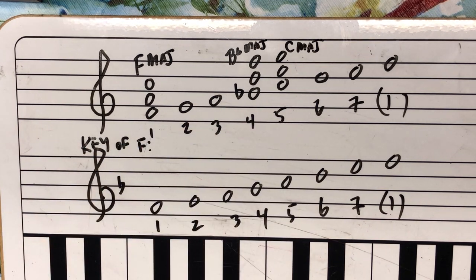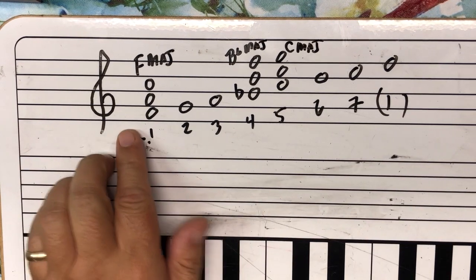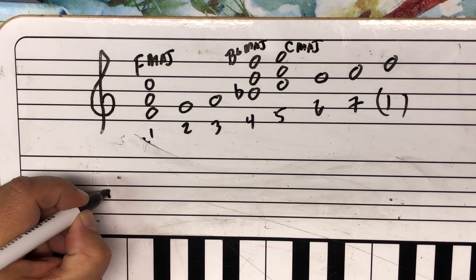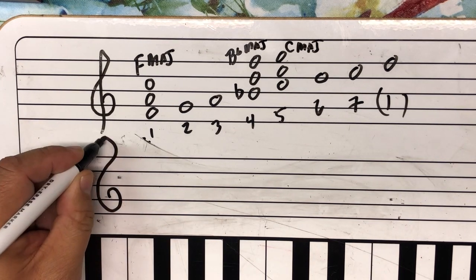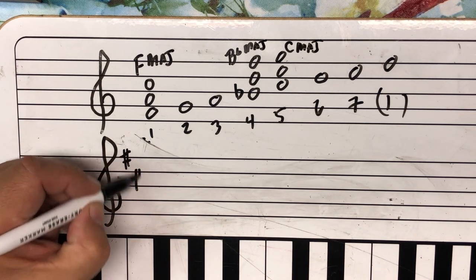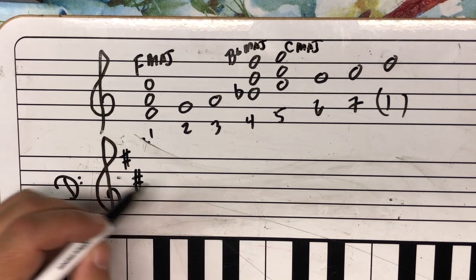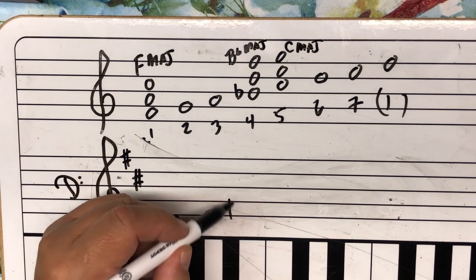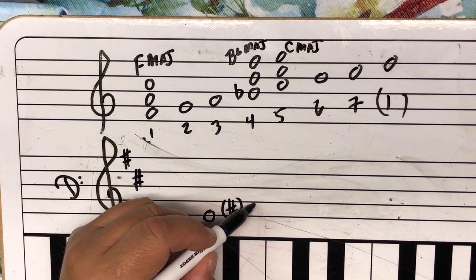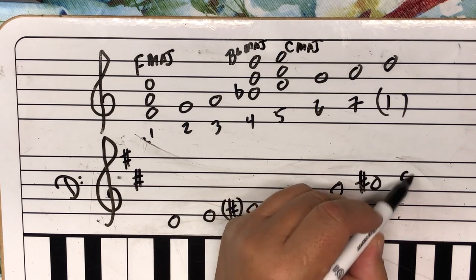You already know this because you did Itsy Bitsy Spider, didn't you? Let me draw what that would look like. Okay. So if you remember the Itsy Bitsy Spider song that you did that for, it was in the key of D because it had two chords. And the key of D has an F sharp and a C sharp because the scale has two sharps, right? We're in D. That would be D, E.